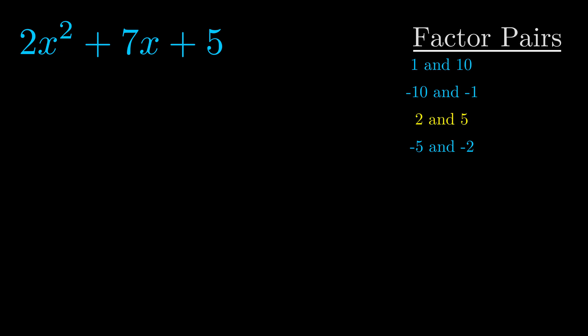And really this is the only factor pair that we need. Now once we have this factor pair, what we want to do is use it to split up the b value.